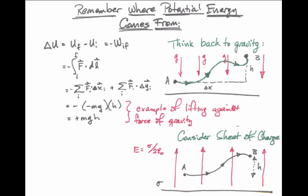Let's assume sigma is positive and the electric field points away from the sheet of charge. If we're trying to drag an object from point A to point B, we must calculate the work in much the same way as we did for gravity. The work to be done is force dotted into displacement, and the change in potential energy is the negative of this integral — or negative of the charge little q that we're trying to move times the integral of E dotted into displacement.